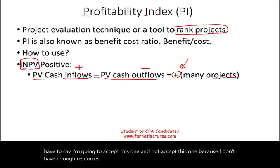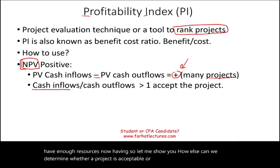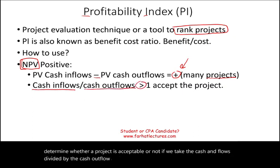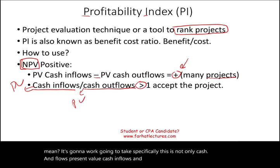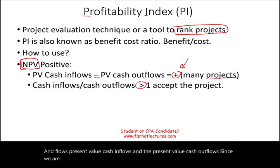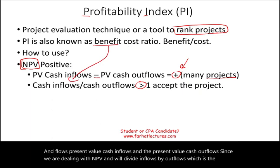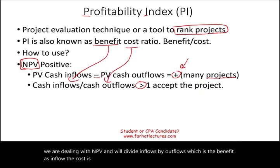Let me show you how we can determine whether a project is acceptable. If we take the present value of cash inflows divided by the present value of cash outflows, and the answer is greater than one, we accept the project. The inflow is the benefit and the outflow is the cost — this is what we mean by the benefit-cost ratio.